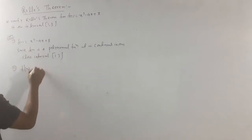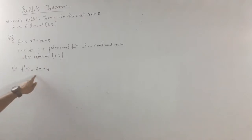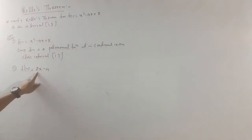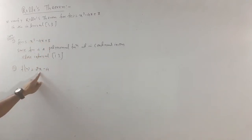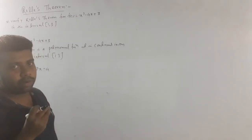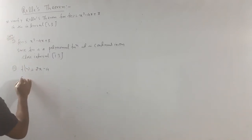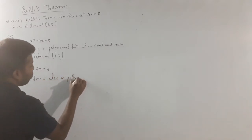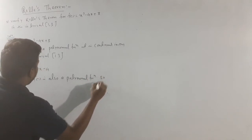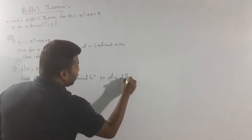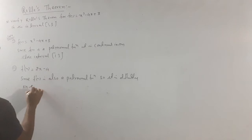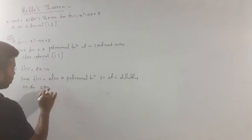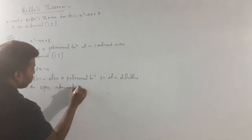Step 2: f dash x equals 2x minus 4. Putting a equals 1: 2 into 1 minus 4 equals minus 2. Putting b equals 3: 2 into 3 minus 4 equals 2. The value is not infinite, so since f dash x is also a polynomial function, it is differentiable on the open interval (1, 3).